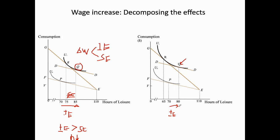The substitution effect is captured by a movement from point Q to point R along the new indifference curve U1. This range represents the substitution effect (SE). In this right diagram, the substitution effect is larger than the income effect — so to be consistent, income effect first: the substitution effect exceeds the income effect.